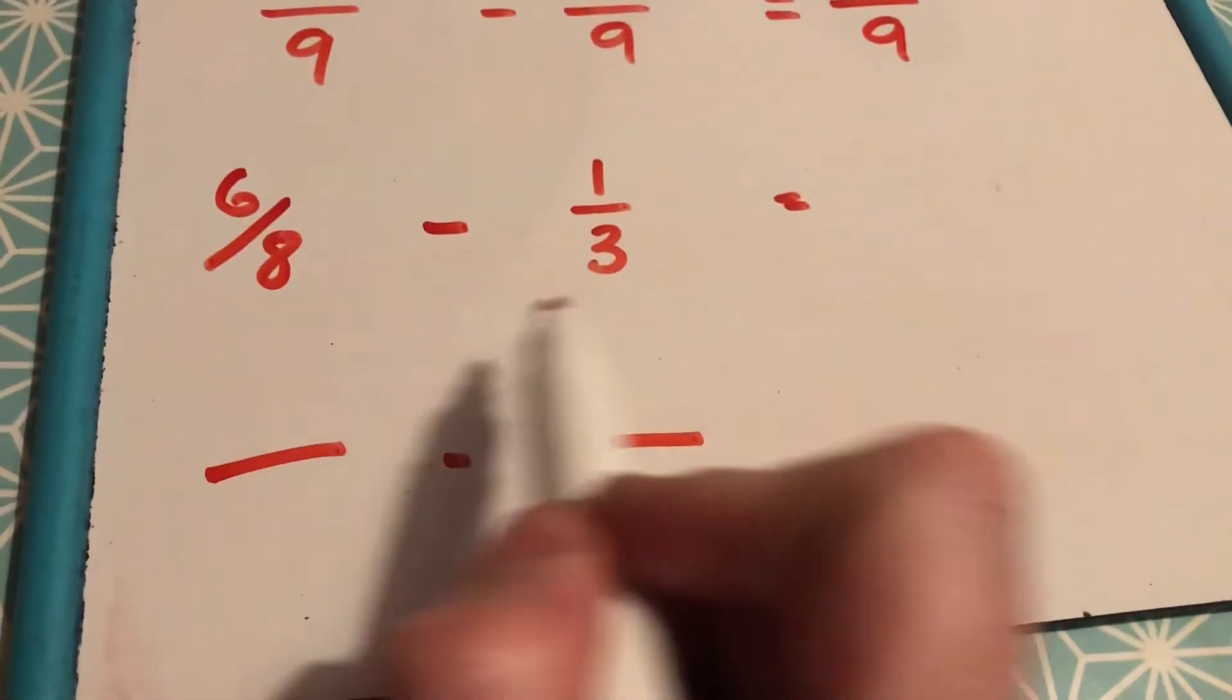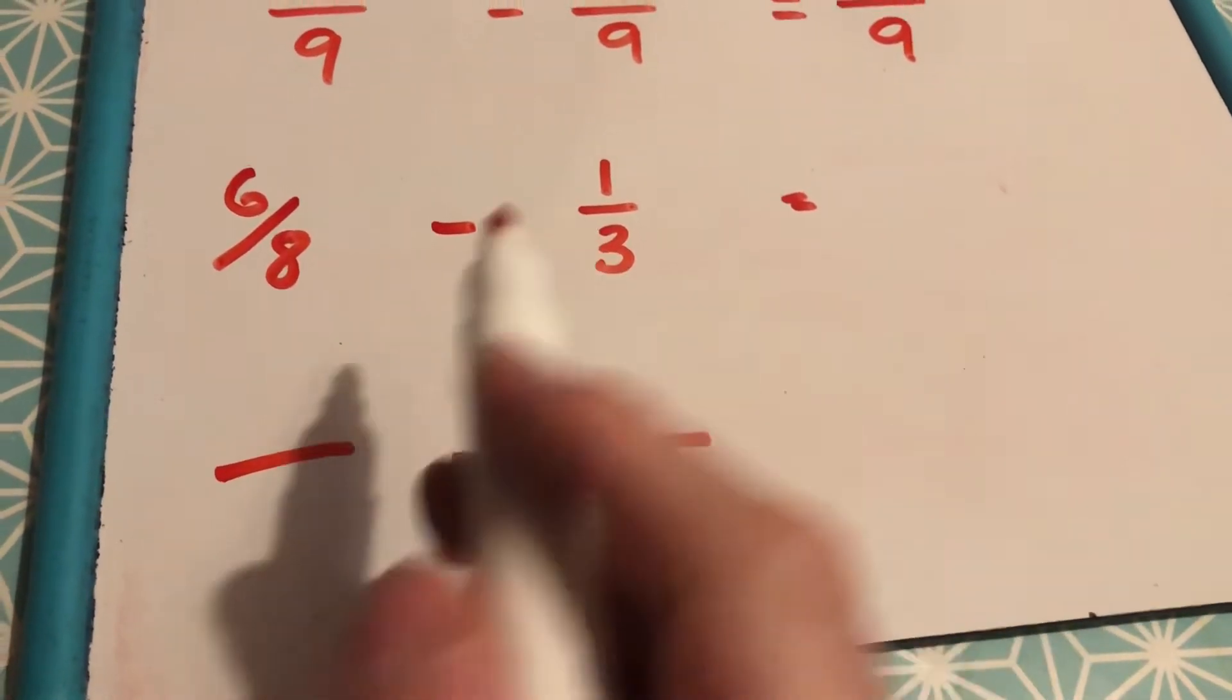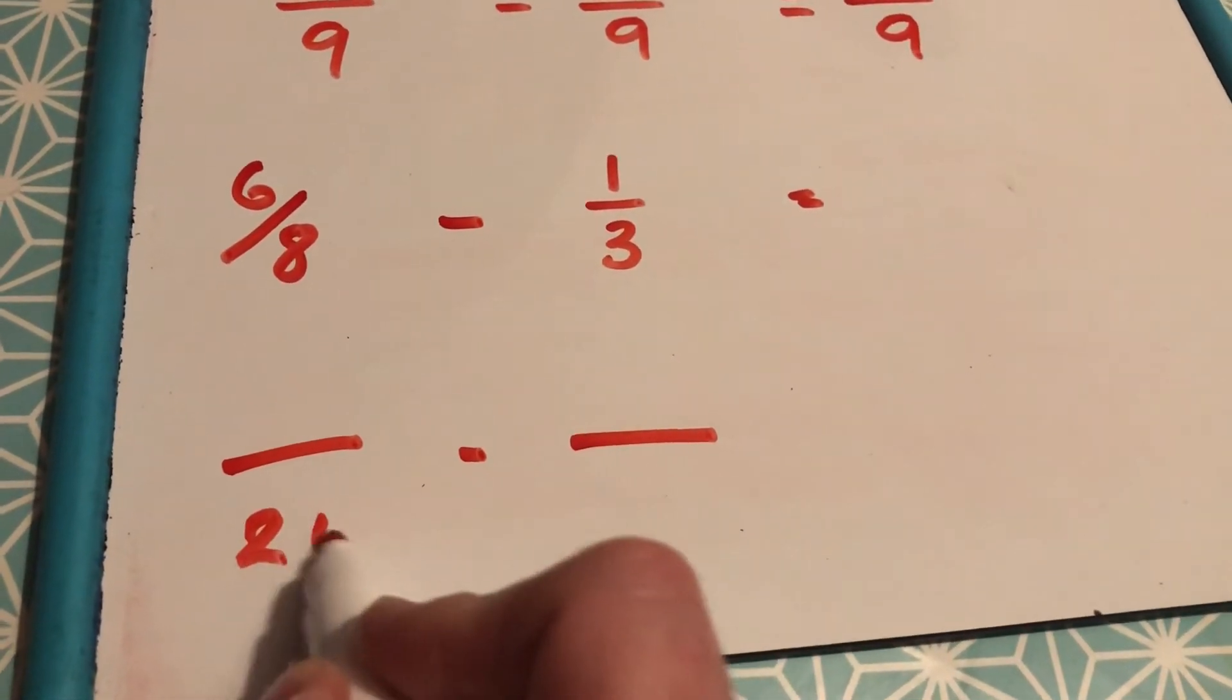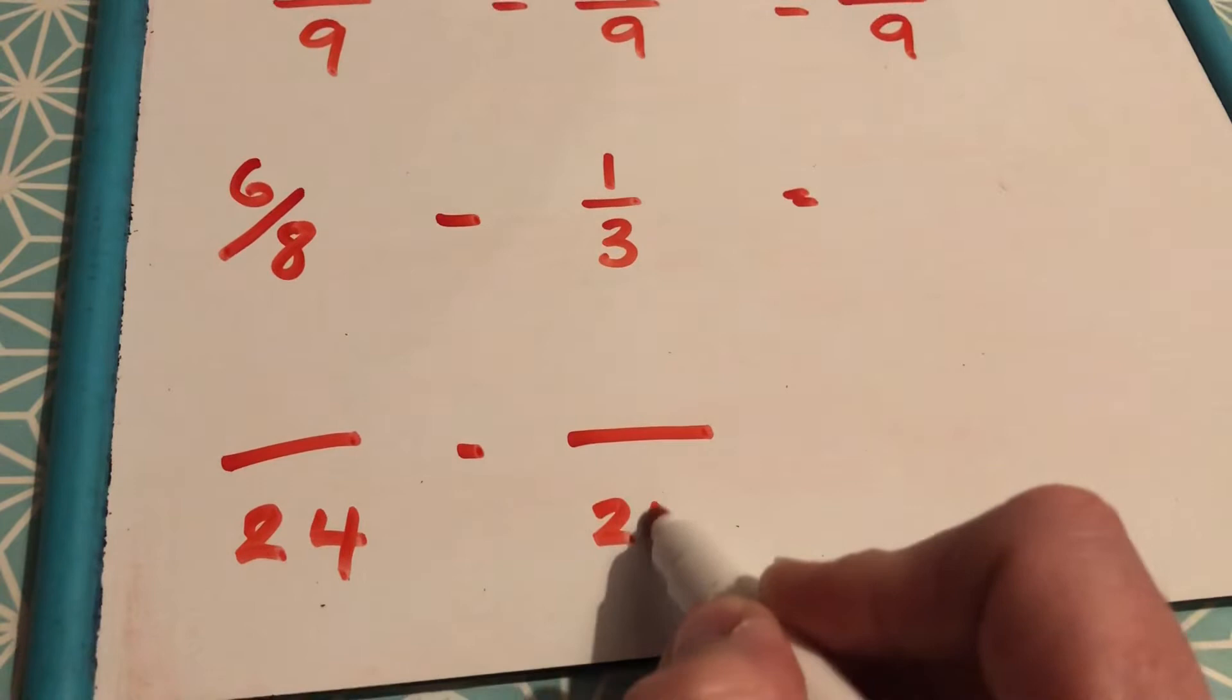So, 8 multiplied by 3 gives you 24. So, choose 24 as your denominator.